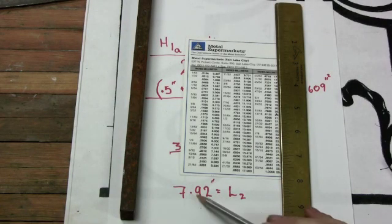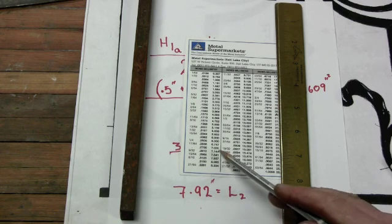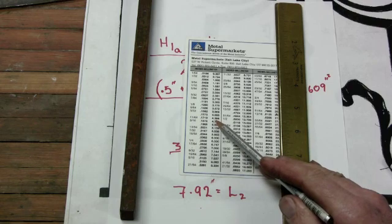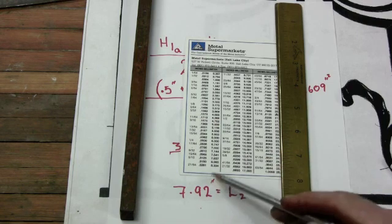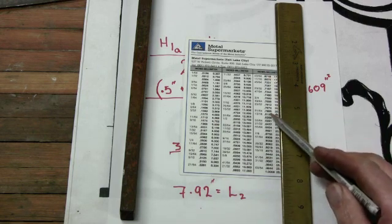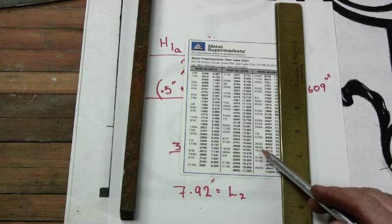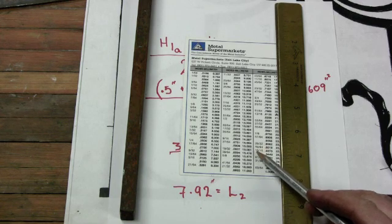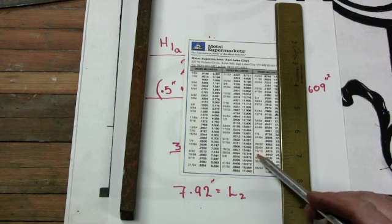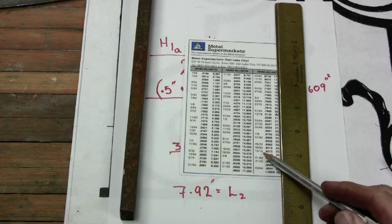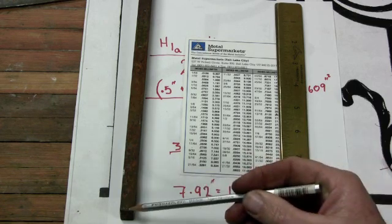I don't know what point nine two of an inch is, but I do have a card that compares fractions to decimals to millimeters. So I'm going to look at point nine two, which is going to be over here. And I've got point nine two one nine is fifty-nine sixty-fourths. Well, that's not a real number for me. I can't understand that. But fifteen sixteenths I can. So I've got seven and fifteen sixteenths of material that I need to measure up from.